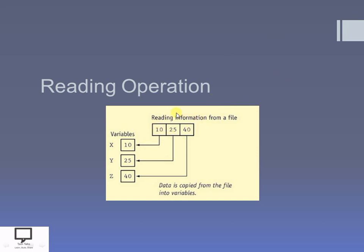Let's consider a file that has data with three integer values stored in consecutive locations. If I want to read this information, I will copy the content of the first position from the file into variable x. Then I move forward to the next position, copy that into another variable, and the file pointer advances again to copy the third value into variable z. Copying data from the file into variables is the reading operation.